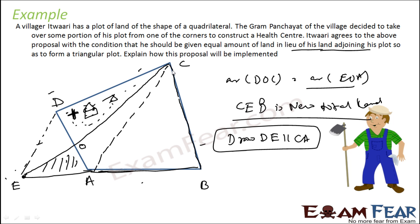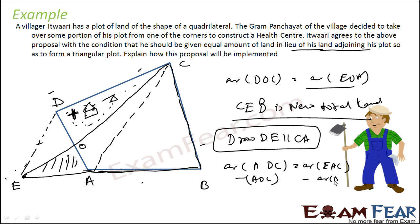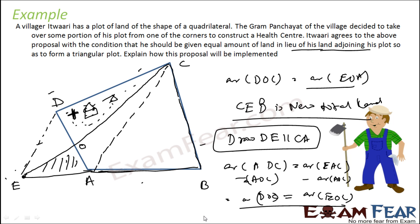If you draw DE parallel to CA, then these are parallel lines and AC is the common base. We can say that area of triangle ABC equals area of triangle EAC. From this, if we subtract the common area of triangle EAC, we get that the areas balance out correctly.